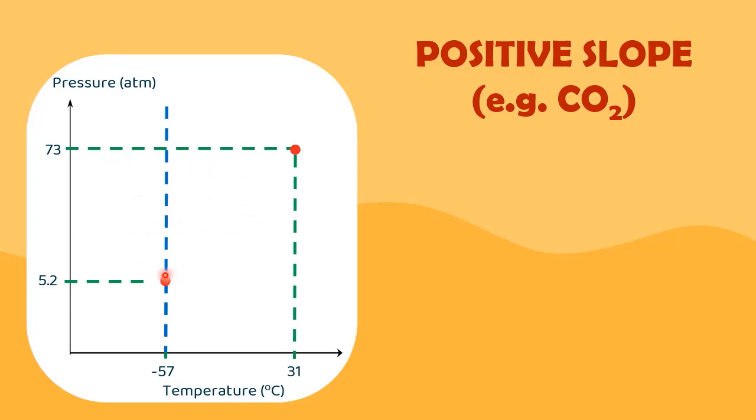For most compounds, the line separating solid and liquid usually has a positive slope, indicated by the curve shifting to the right, as shown in the figure.